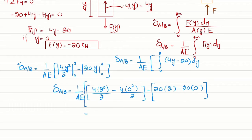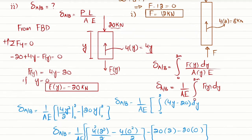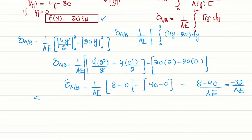Evaluating: 4 times 4 divided by 2 = 8, and 20 times 2 = 40, with zero terms dropping out. So we get 8 minus 40 divided by AE, which equals minus 32 divided by AE. This is the displacement of point A with respect to B. The unit of force is kilonewtons, so we have minus 32 kilonewton·meter divided by A times E.